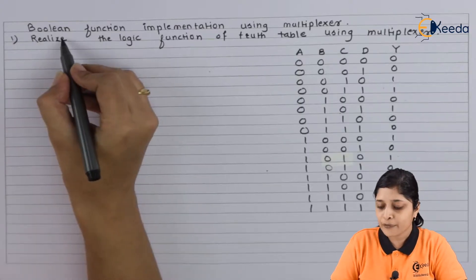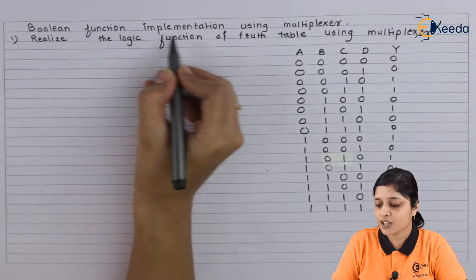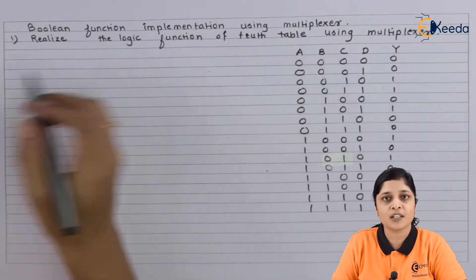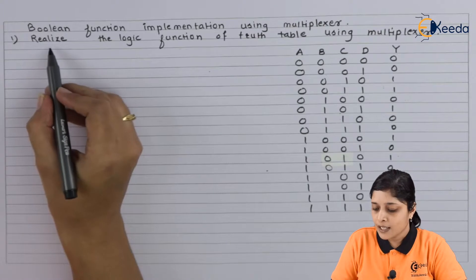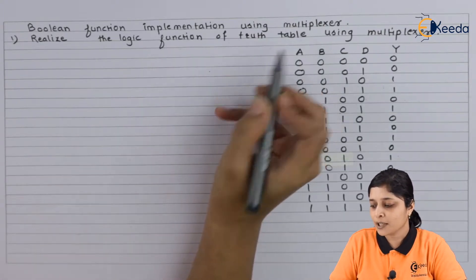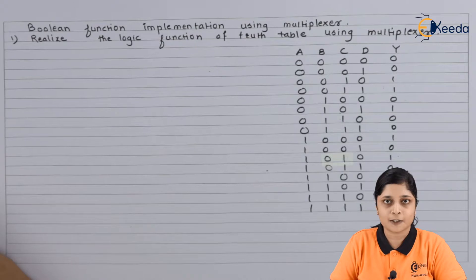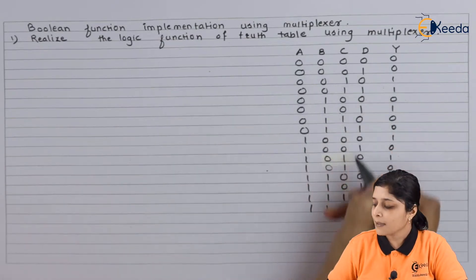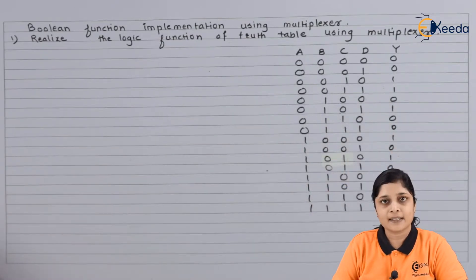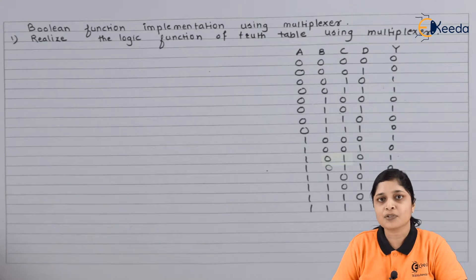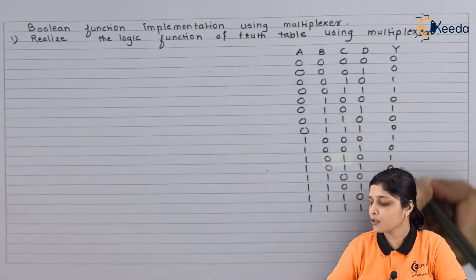You have to find the boolean function implementation using multiplexer. Realize the logical function of the truth table using multiplexers. The truth table is given, so first of all you have to focus on the logic.